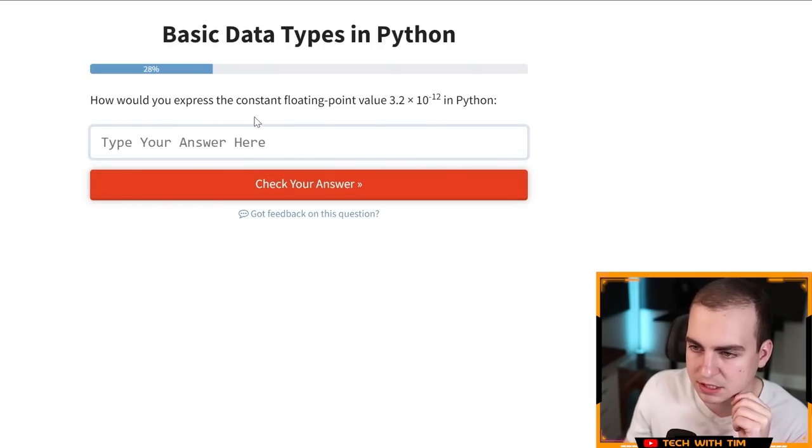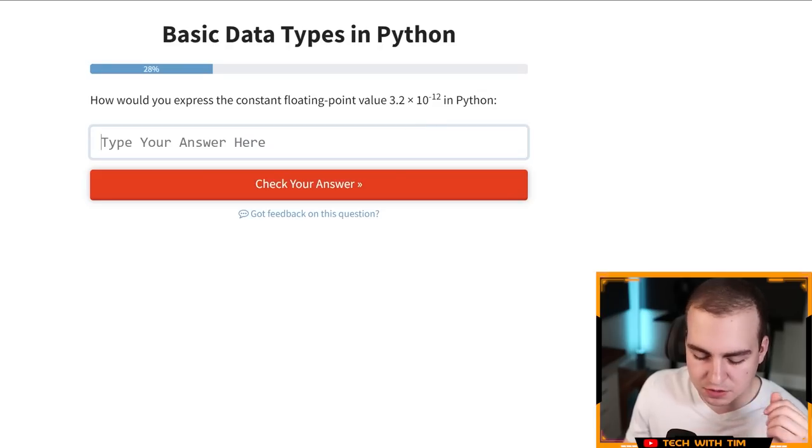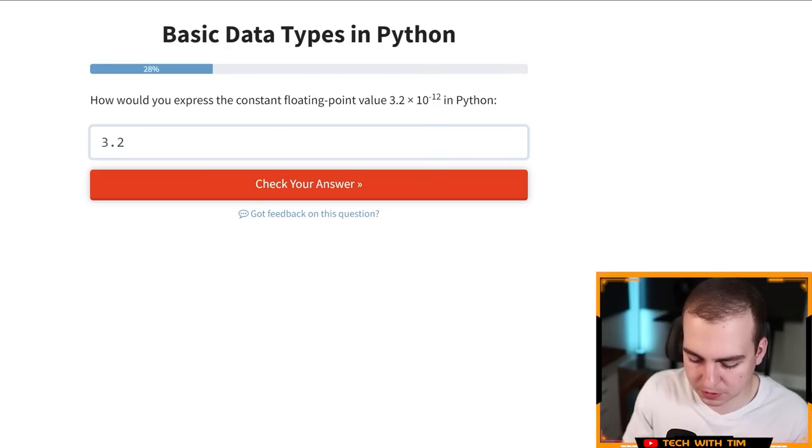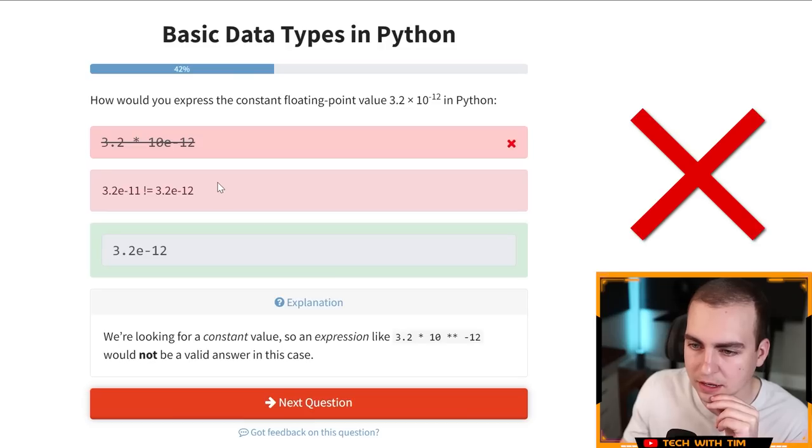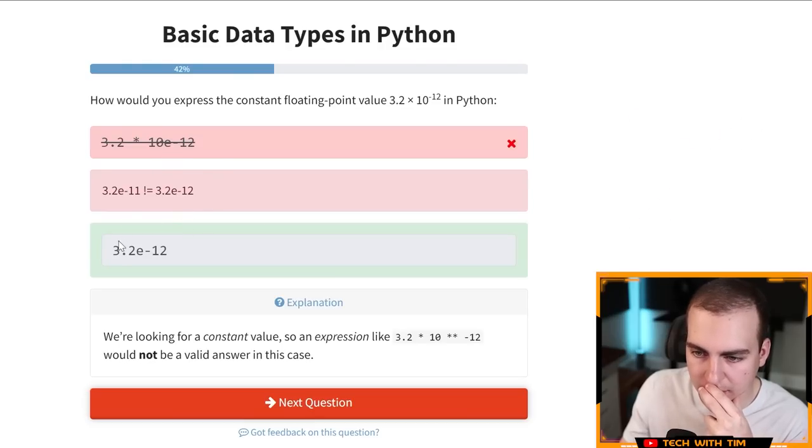How would you express the constant floating point value 3.2 times 10 to the negative 12 in Python. So you have to do something with like E here. So it'd be 3.2 asterisks. And then this would be 10 E negative 12. That's what I think it is, but I don't know if you do the E like this. So let's try that. And was I close? Oh, you just, you don't need the 10. Okay. I mean, I think that was pretty good. I had the E so if I had just removed the 10, it would have worked. I also didn't need the, what do you call it? Yeah. Okay. I got, makes sense.